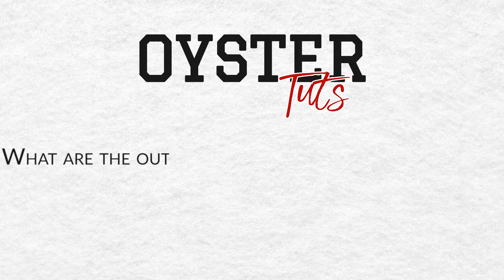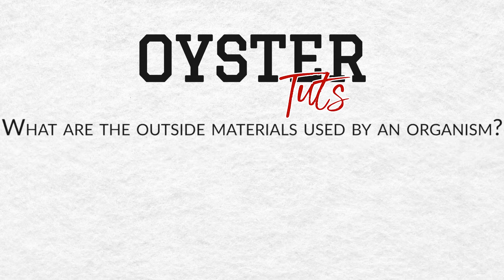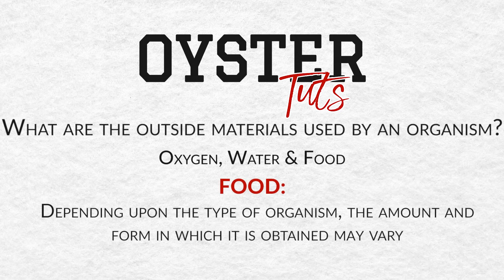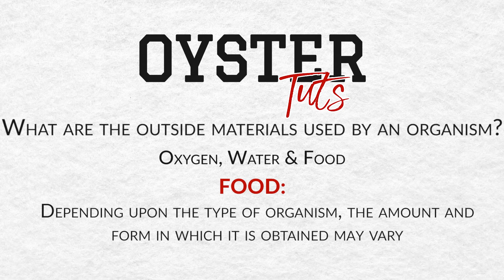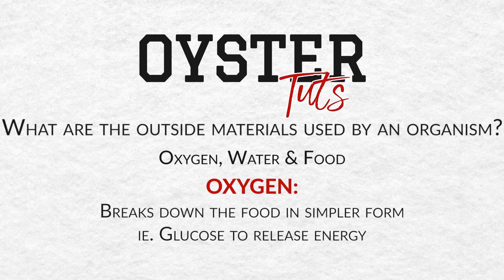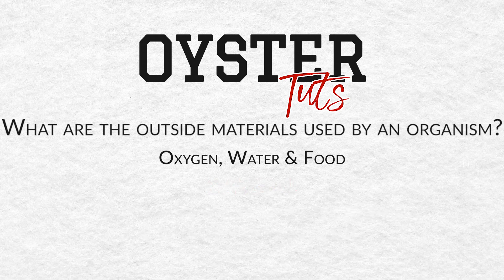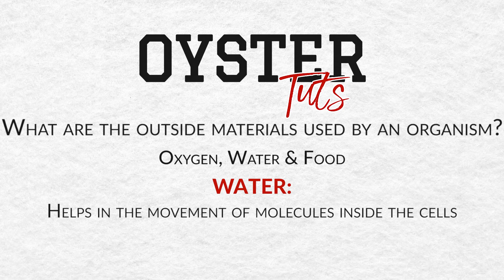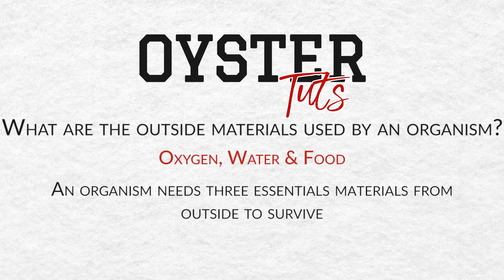Question number three: what are the outside materials used by an organism? An organism needs three things: oxygen, water, and food. Depending upon the type of organism, the amount and form in which they obtain these may vary — in terms of amount of food and the form, whether in decaying matter, or direct food as in holozoic nutrition, or from living organisms as in parasitic nutrition. Oxygen is required for the breakdown of glucose to release energy, and water helps in the movement of molecules inside the cells.